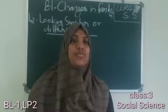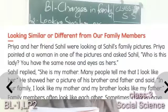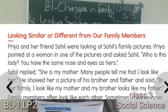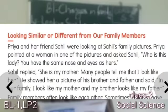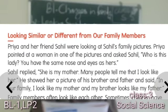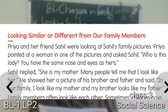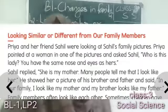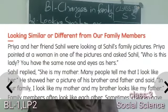Now we can read a story from your content book. Priya and her friend Sahil were looking at Sahil's family picture. Priya pointed at a woman and asked Sahil, 'Who is this lady? You have the same nose and eyes as hers.' Sahil replied, 'She is my mother. Many people tell me that I look like her.' He showed her a picture of his brother and father and said, 'In our family, I look like my mother and my brother looks like my father.' So Sahil and his brother look like their parents.